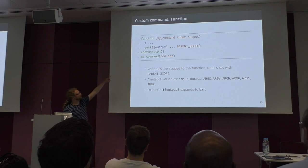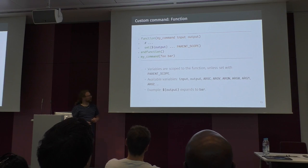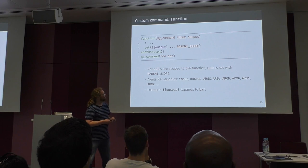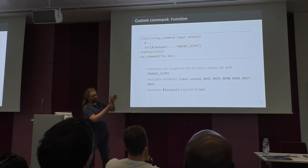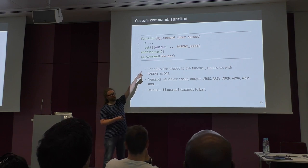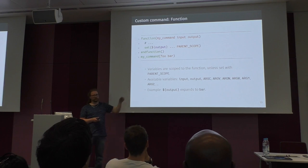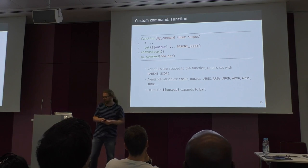Inside a function we have the named variables from the argument list, plus ARGC which is the number of arguments, ARGV which is the total list of arguments, ARGN which is the list of arguments not bound to a name, and ARG0 through ARG9 bound to specific positional arguments.